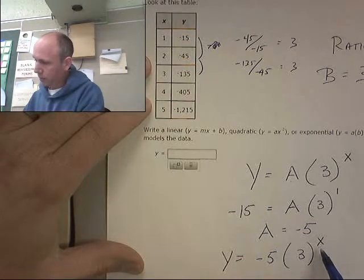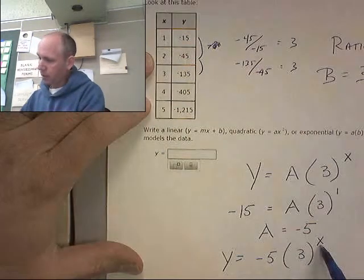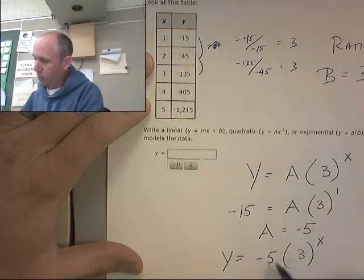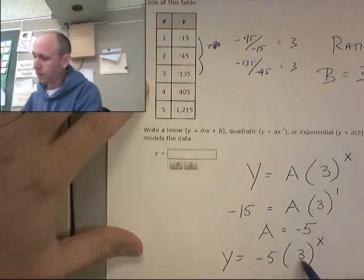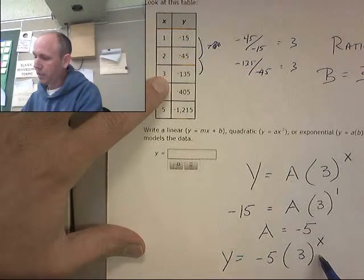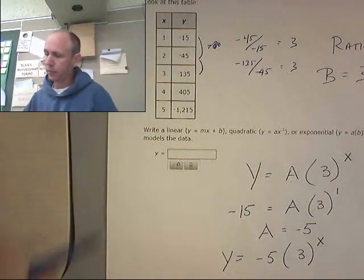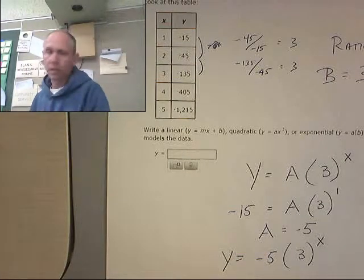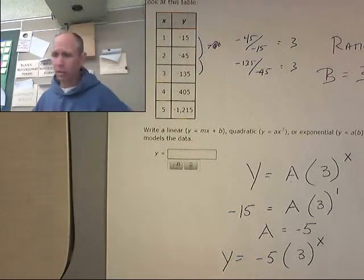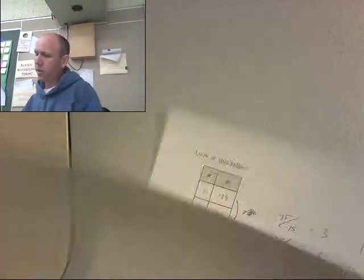y equals negative 5, 3 to the x. And does that work? I'm checking it. If I put a 2 here, 3 squared is 9 times negative 5 is negative 45. This seems to be working. This would be 27 times negative 5, which is negative 135. That's good. I like that method. Woo! I learned something today.